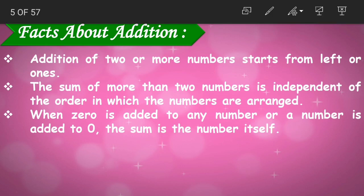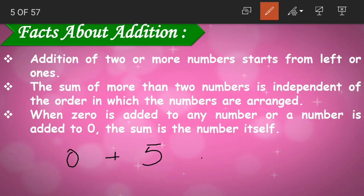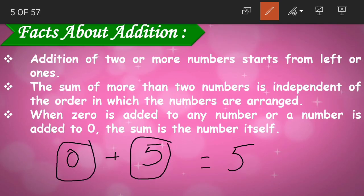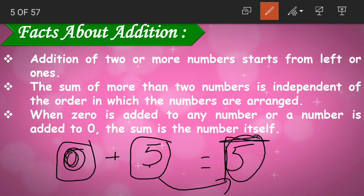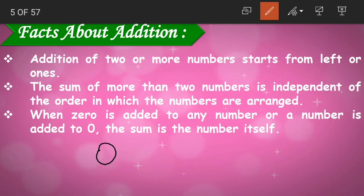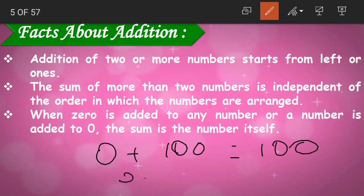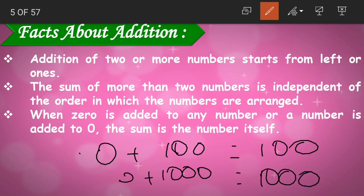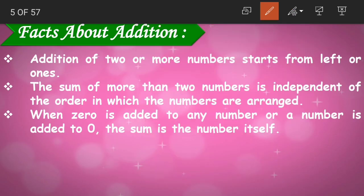When 0 is added to any number, or a number is added to 0, the sum is the number itself. For example, if you had 0 chocolates and I give you 5, you now have 5 chocolates. Whenever we add any number to 0, the answer will always be that number. So 0 plus 100 is 100, and 0 plus 1000 is 1000.